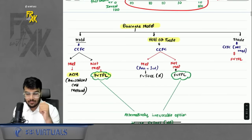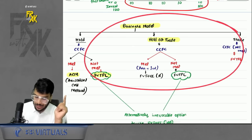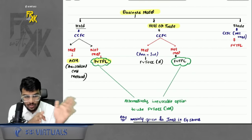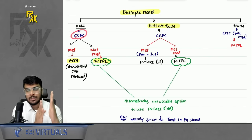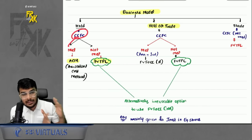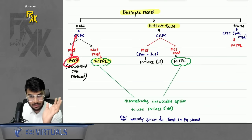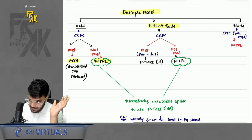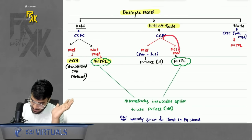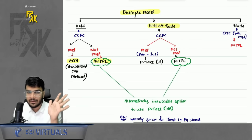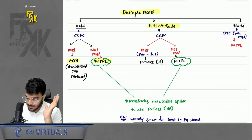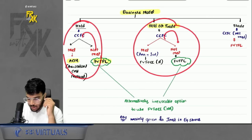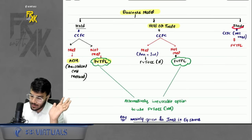Based on the outcome of the business model and CCFC tests, we determine which method to use. If the business model is hold and CCFC is met — use ACM. If CCFC is not met — use FVTPL. If the business model is hold or trade and CCFC is met — use FVTOCI-R. If CCFC is not met — use FVTPL. If the business model is trade — always use FVTPL regardless of CCFC. A simple rule: whenever CCFC is not met in the first two cases, the default method is FVTPL.